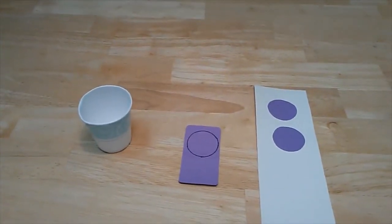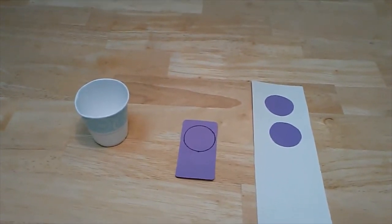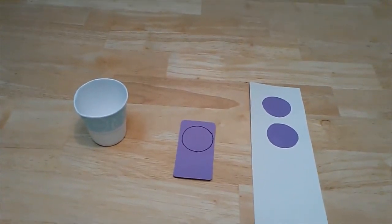First I trace six circles on a piece of construction paper to make the petals for the flower. I used a three ounce paper cup to trace the circles on my paper. Then I cut out the circles.